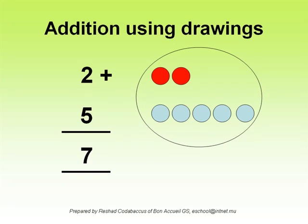In this example, we have to add 2 to 5. We can draw 2 objects for number 2 and 5 objects for number 5. We can count all the objects to find the sum, which is 7.